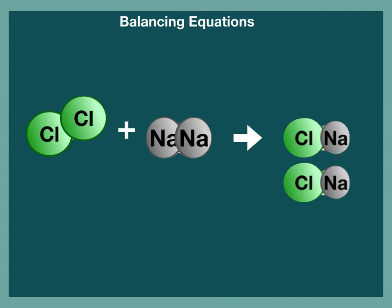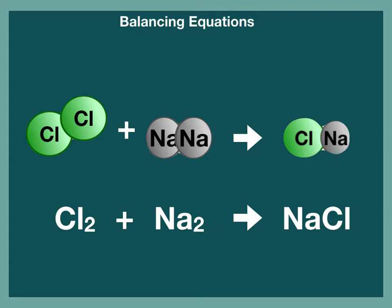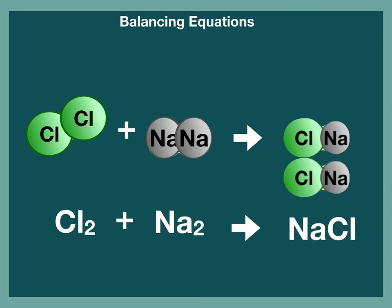Let's see what it looks like in the written version. Remember, this is what we started with at the beginning — we had one of each molecule and the equation was not balanced. The subscript, the number that follows the chlorine or sodium symbol, represents the number of atoms of that element in the compound. To balance the equation, we added another molecule of sodium chloride, placing a two in front of the sodium chloride compound to indicate two molecules. This two is called the coefficient. Only coefficient numbers can be changed when balancing equations.